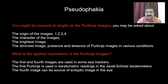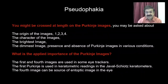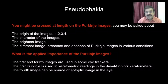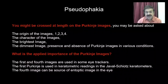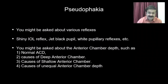The applied importance of the Purkinje image is an important question. The first and fourth images are used in some eye trackers and optical devices. The first Purkinje image is used in keratometric readings in the Javal-Schiotz keratometer. The fourth image can be a source of an entoptic image in the eye — an image formed by light within the eye, not from the external world. The fourth Purkinje image gets reflected from the concave surface of the posterior cornea and reaches the retina, where it is seen as an entoptic image.